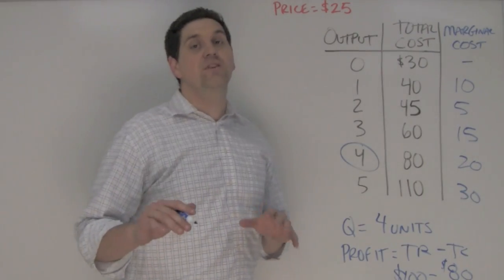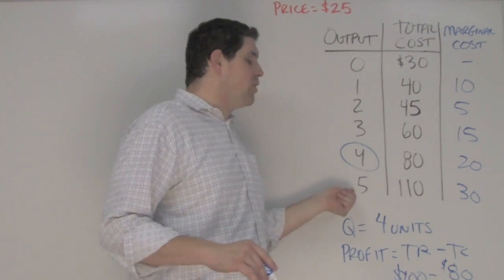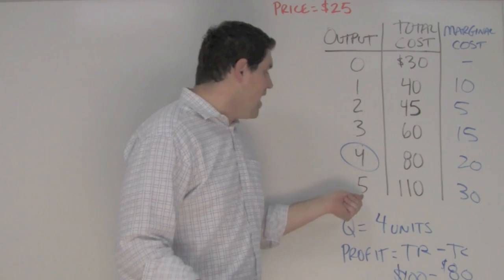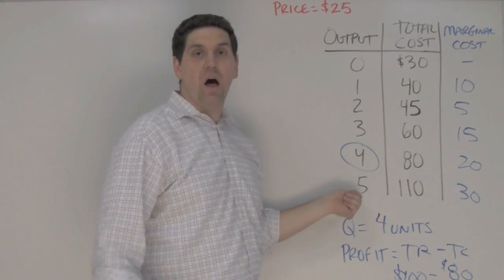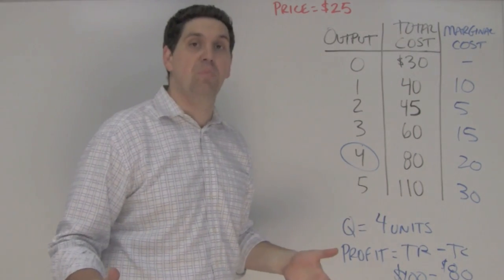Bonus round. Be careful on your test and how you explain why you should produce four units. A lot of students say we wouldn't produce the fifth because there'd be a loss and that's not true. In fact, if you sell five units for $25 each, that's $125 revenue minus $110 cost - that's $15 profit.